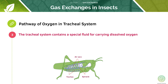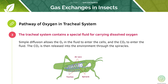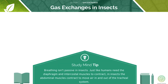The tracheal system contains a special fluid for carrying oxygen. Oxygen in the air enters the tracheal system and is dissolved into this special fluid. Once this fluid reaches the individual cells, simple diffusion will allow the oxygen to enter the cells, and the carbon dioxide can enter the fluid. The carbon dioxide is then released into the environment through the spiracles. Breathing isn't passive in insects — they use their abdominal muscles to contract and move air in and out of the system.